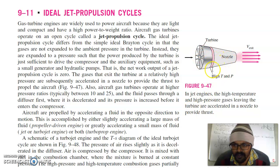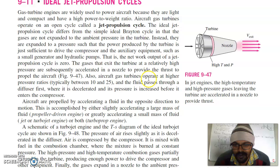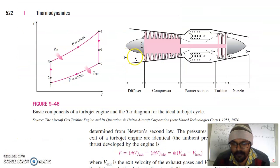You can see this is your turbine, this is the nozzle. This is high velocity gases which will actually propel the aircraft. Also, the aircraft gas turbines operate at higher pressure ratios typically between 10 and 25 and the fluid passes through a diffuser first where it is decelerated and its pressure is increased before it enters the compressor. This is the basic component of the turbojet engine. The first component is your diffuser here. From 1 to 2 is the pressure rise in the diffuser. From 2 to 3 is your compressor. From 3 to 4 is your heat addition at constant pressure which is burner structure. 4 to 5 is your turbine. And from 5 to 6 this is your nozzle. Further gases will expand in the nozzle.